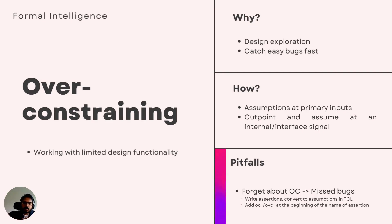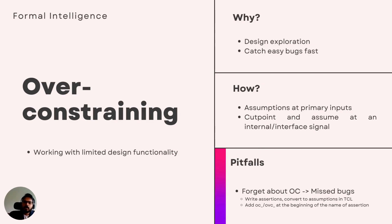Over-constraints can be dangerous if you forget to remove them. You may write enough checks, see no failures after a few months, and sign off the design believing formal found no bugs up to a certain bound — when in reality you had disabled certain functionalities via over-constraints. This is much worse than a tool crashing, because you are essentially claiming you verified something that you did not. The fix requires discipline in how you manage these constraints.